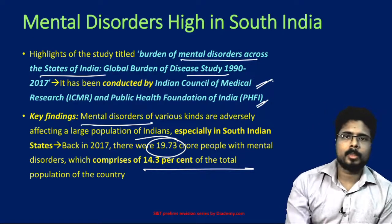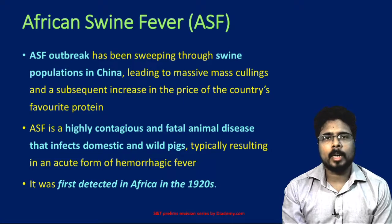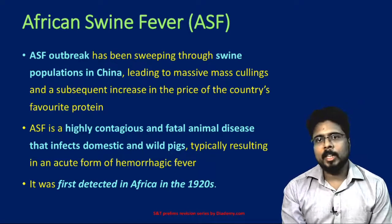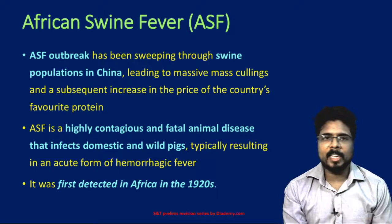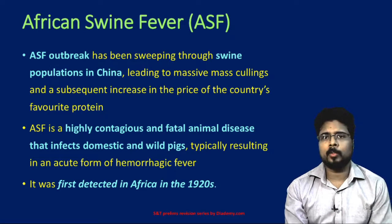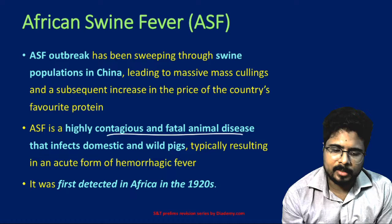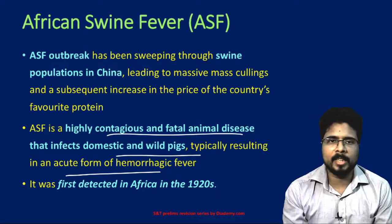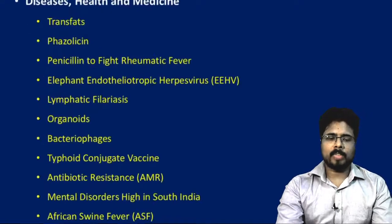African Swine Fever, or ASF, has been sweeping through pig populations in China, leading to mass killings of pigs and subsequent increases in the price of proteins. Many diseases originate in China due to its wet markets, which are unhygienic hotspots for various diseases. ASF is a highly contagious and fatal animal disease that infects domestic and wild pigs, typically causing an acute form of hemorrhagic fever. It was first discovered in Africa in 1920, which is why it is called African Swine Fever.